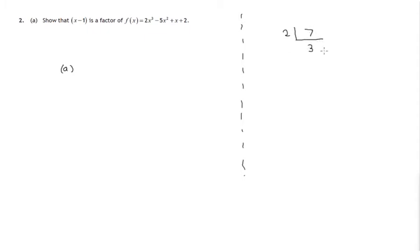2 threes are 6 plus a remainder of 1. What we've discovered about 7 is that it's 2 times 3 plus 1.